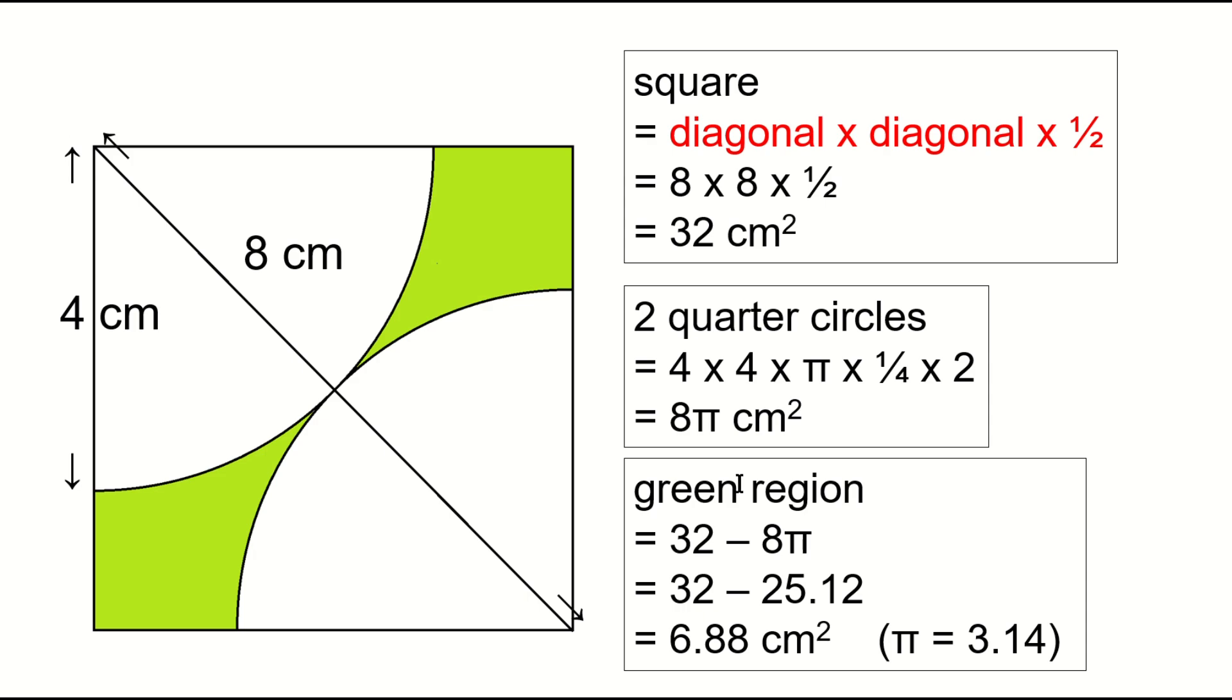If pi is 3.14, then 32 minus 25.12 is, 6.88 square centimeters. This is the answer to this problem.